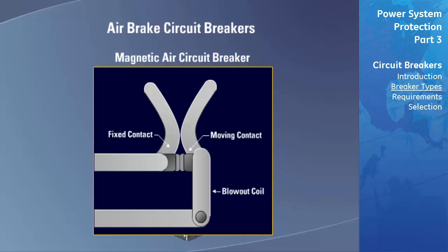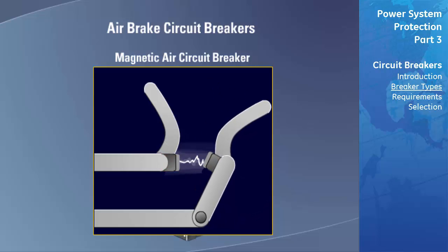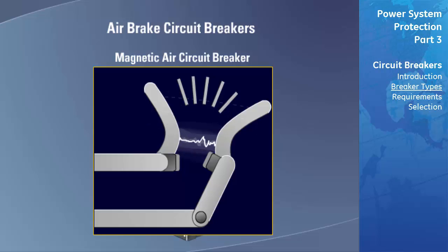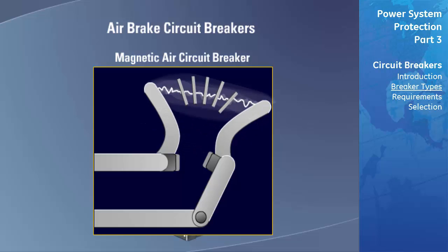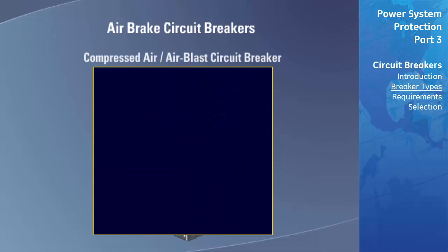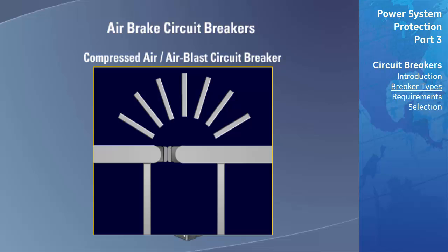The magnetic air circuit breaker interrupts the arc between two separable contacts with the aid of magnetic blowout coils. As the current-carrying contacts separate during a fault condition, the arc is drawn out horizontally and transferred to arcing contacts. The blowout coil provides a magnetic field to draw the arc upward into the arc chute, where it is elongated and divided into many small segments. Compressed air circuit breakers depend on a stream of compressed air directed toward the separable contacts to interrupt the arc.